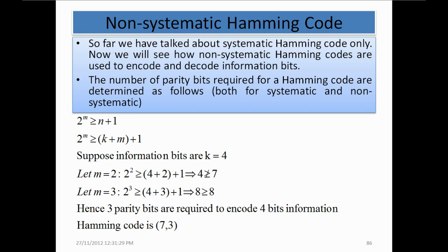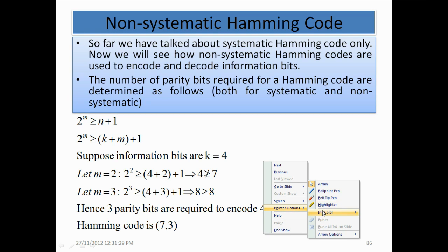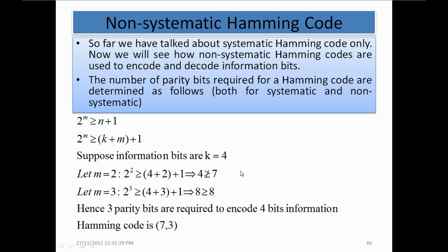The number of parity bits required for a Hamming code are determined as follows: 2 raised to power m is greater than or equal to n plus 1, or 2 raised to power m is greater than or equal to k plus m plus 1. Here k is the number of information bits, and we have to choose a value of m which makes this equation true.